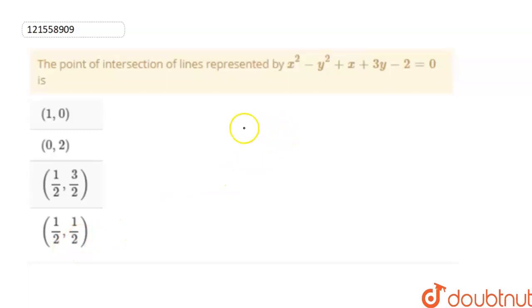1 by 2. So what do we have here? The equation here is x² minus y² plus x plus 3y minus 2 is equal to 0.